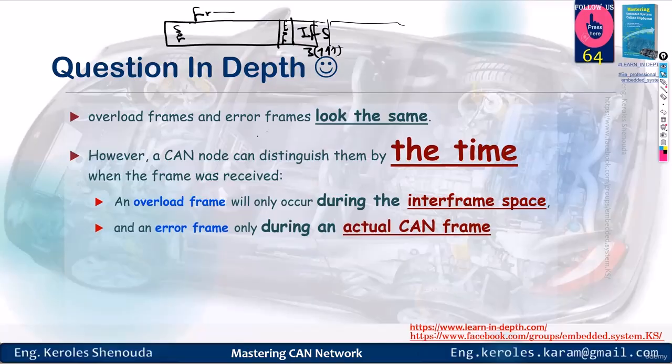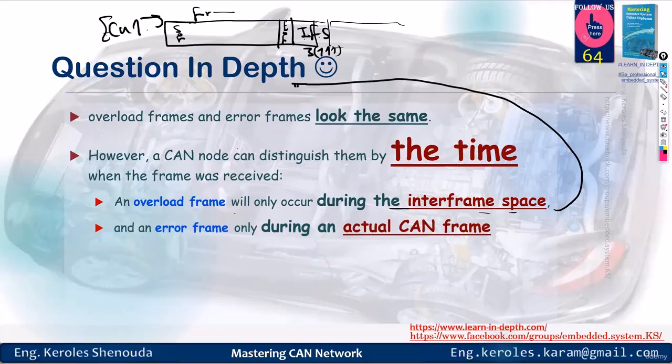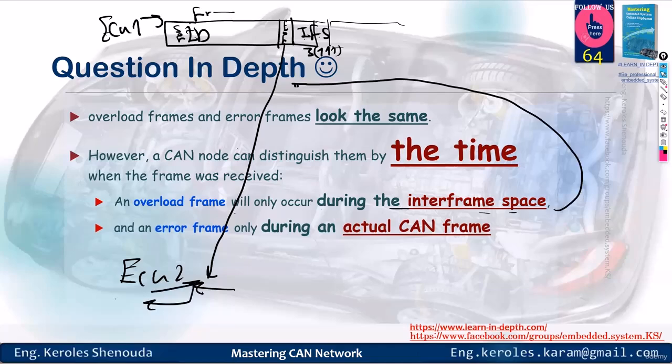Listen closely because this part is crucial. ECU1 sends the frame with the ID understood by ECU2. ECU2 keeps receiving, and as soon as it receives the end of frame, it finds out that it has no space left—its mailbox is full. At this very moment, ECU1 sends the IFS to separate between the frames. This means no one should use the bus for just three bits. ECU2, upon detecting the end of frame, couldn't accommodate the IFS, so it immediately responds with an overload frame. This overload frame is sent during the IFS or inter-frame space.